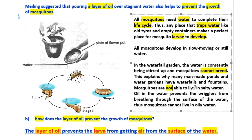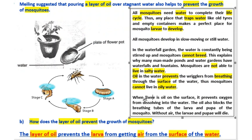Mosquitoes are not able to live in salty water. Oil in the water prevents the wrigglers from breathing through the surface of the water, so mosquitoes cannot live in oily water. When there is oil on the surface, it prevents oxygen from dissolving into the water. The oil also blocks the breathing tubes of the larvae and pupae of the mosquito. Without air, the larvae and pupae will die.